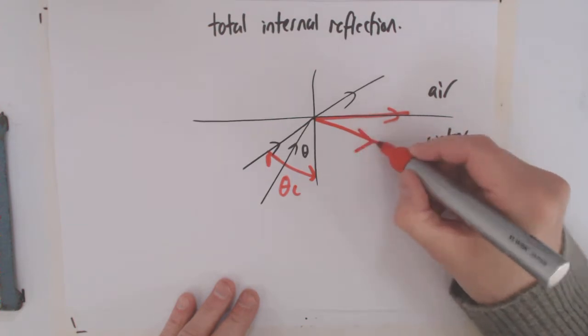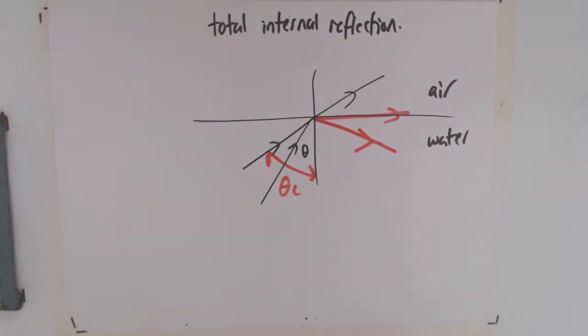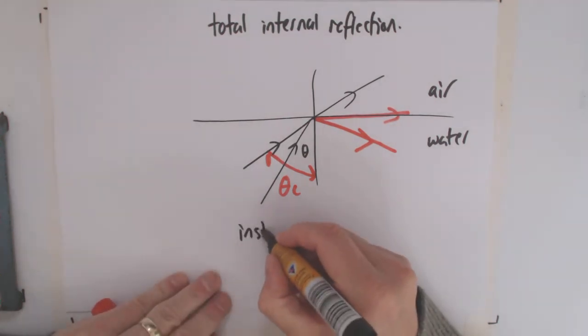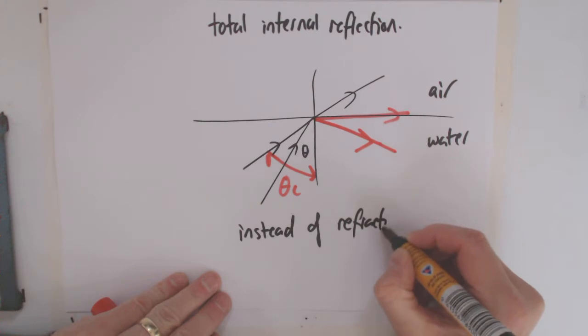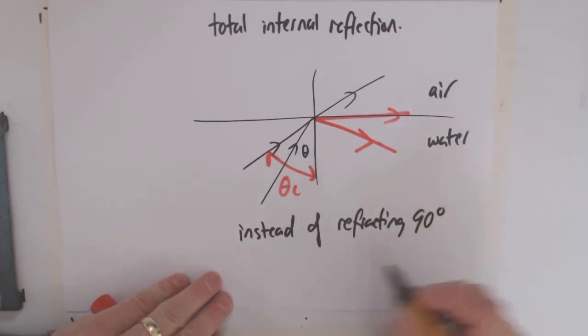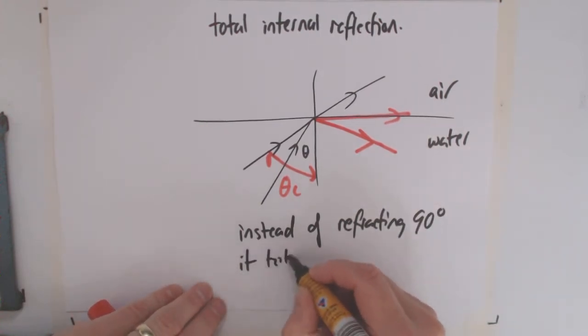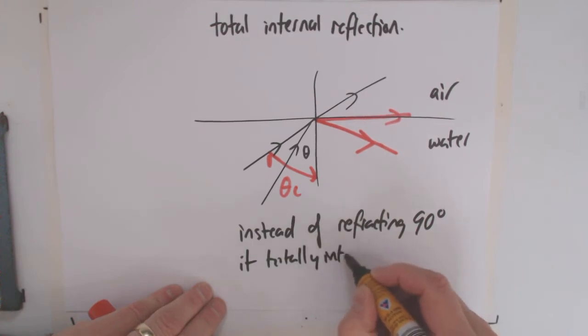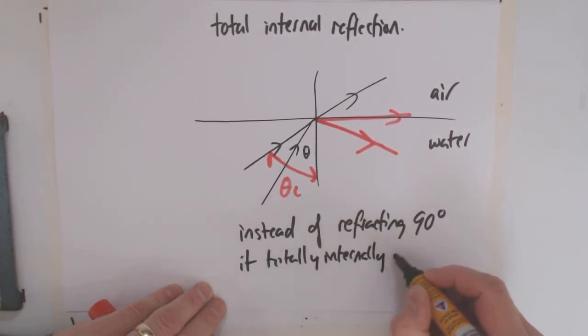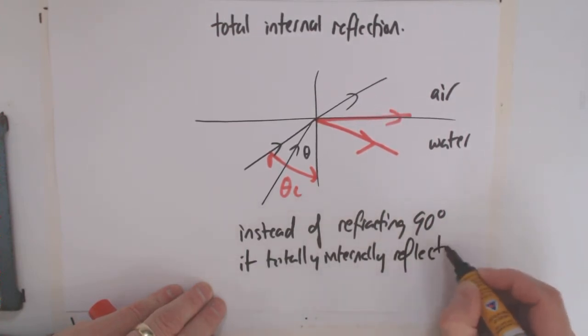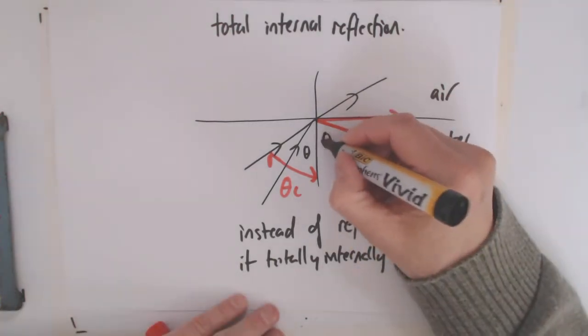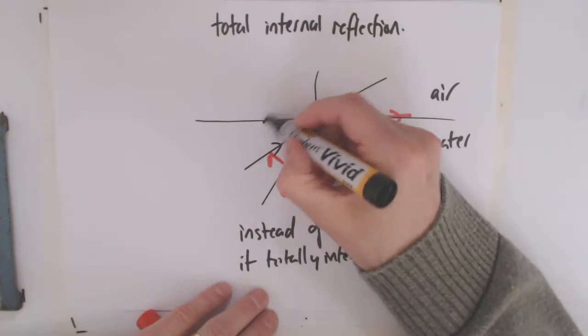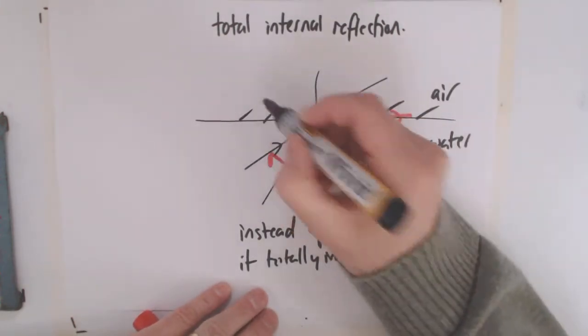Instead of reflecting 90 degrees, it totally internally reflects, so it actually acts like a mirror. This would also be theta c, so that then starts to act like a mirror.